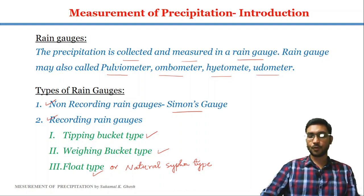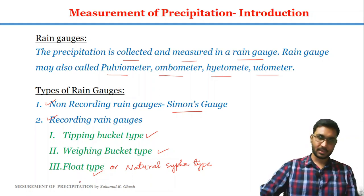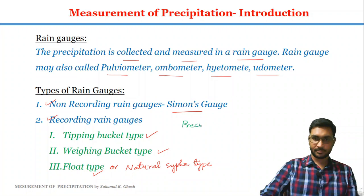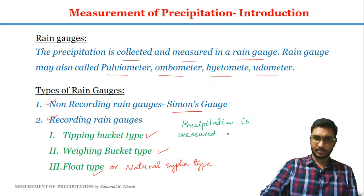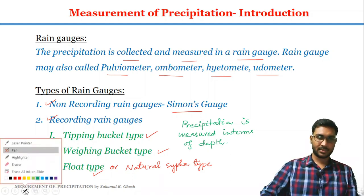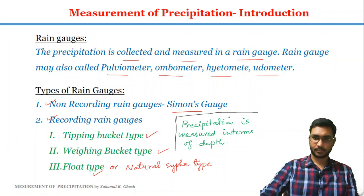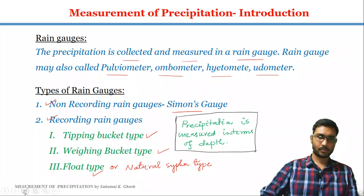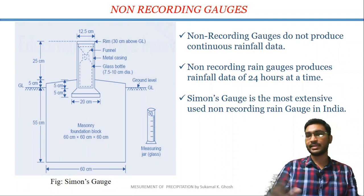Before going into the detailed discussion about rain gauges, we should know an important piece of information: precipitation is measured in terms of depth. Now we are going to discuss about non-recording gauges.